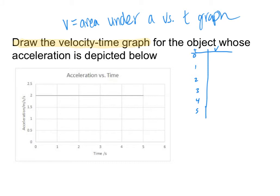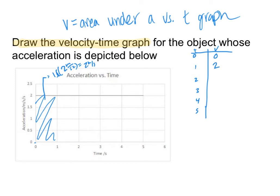Starting the table with times 0, 1, 2, 3, 4, 5 seconds: we assume initial velocity is 0. At 1 second, the area under the graph is base times height — 1 second times 2 meters per second squared — giving 2 meters per second. At 2 seconds, we already have 2 m/s and we add another 1 times 2, giving 4 meters per second. Remember, we don't go back to zero each time — we always add the new area to the running total.